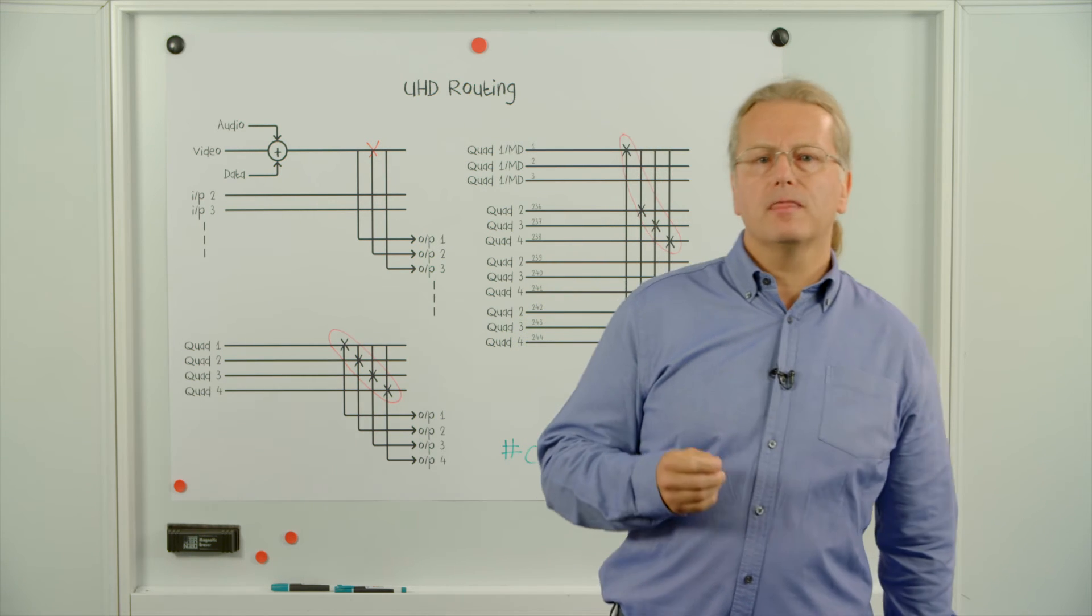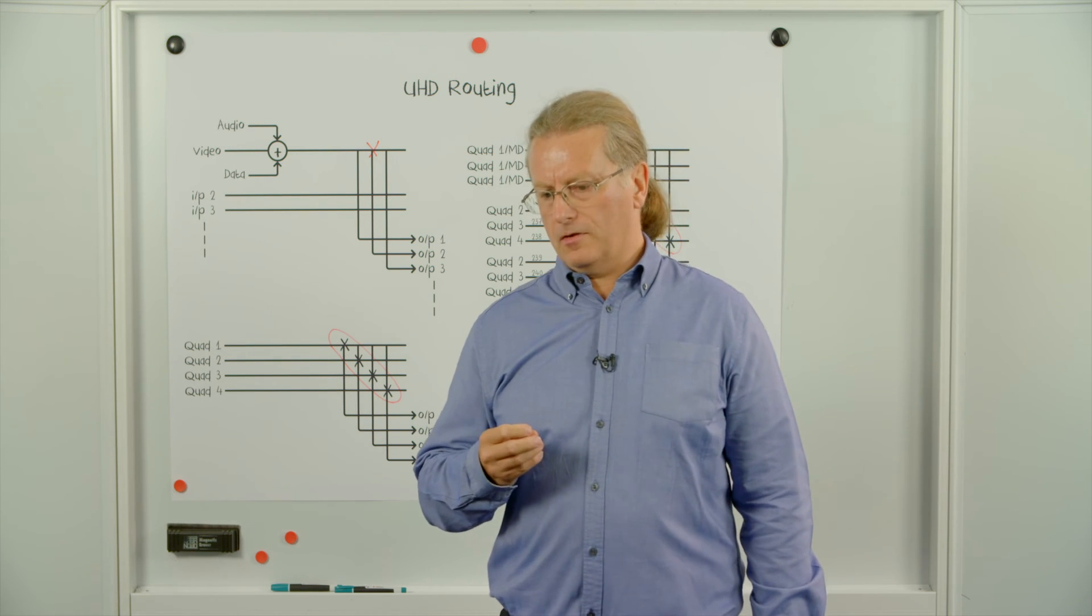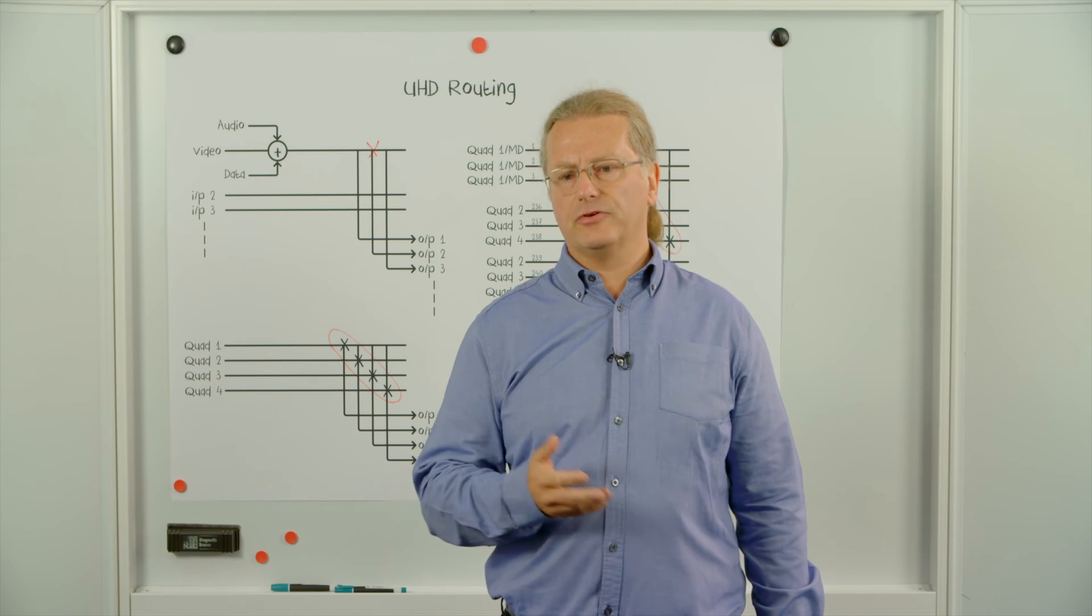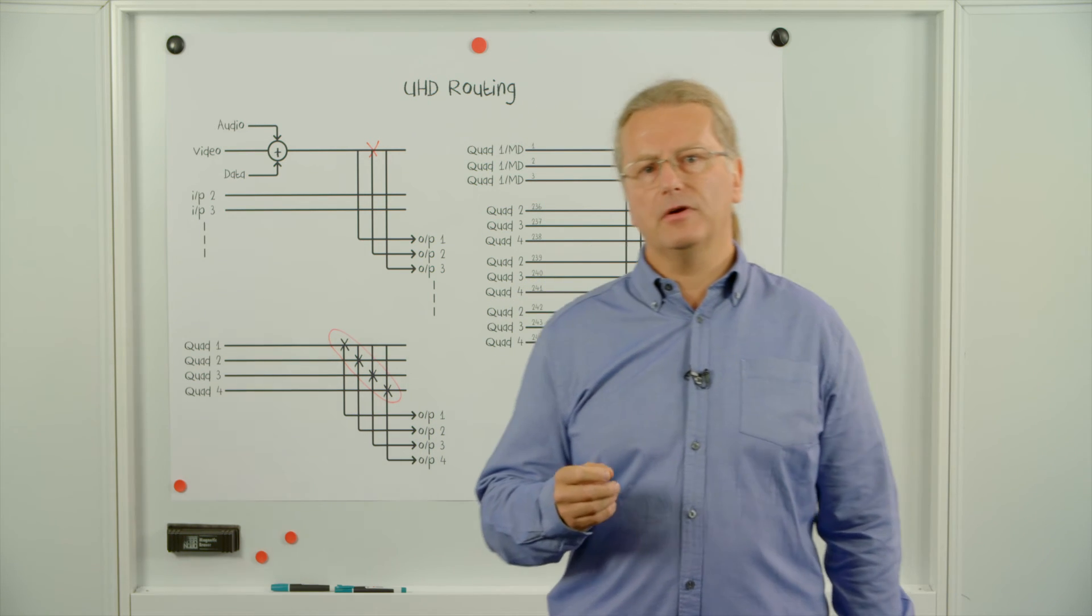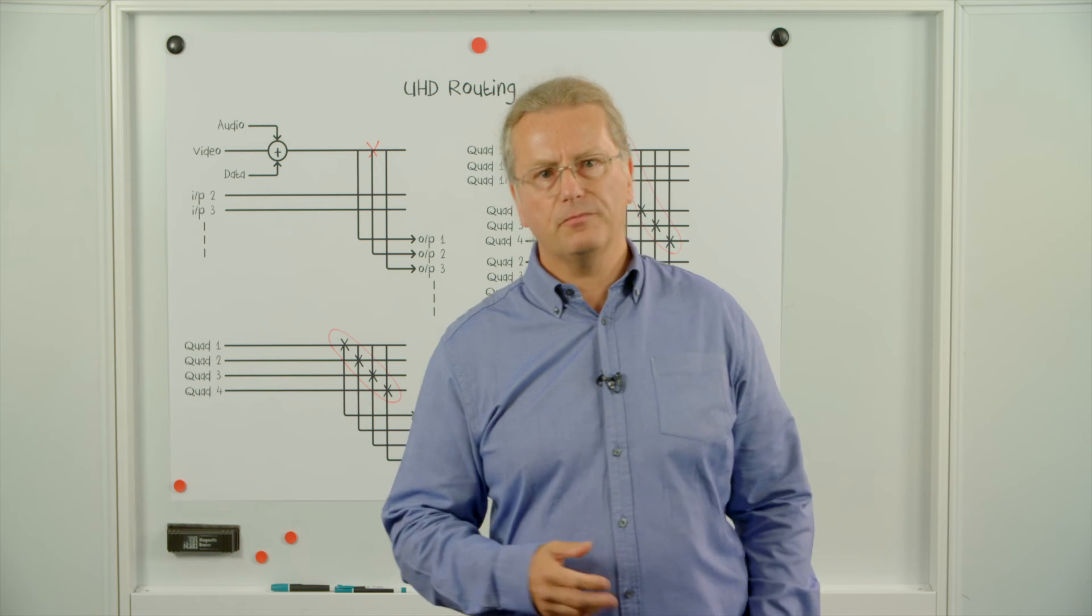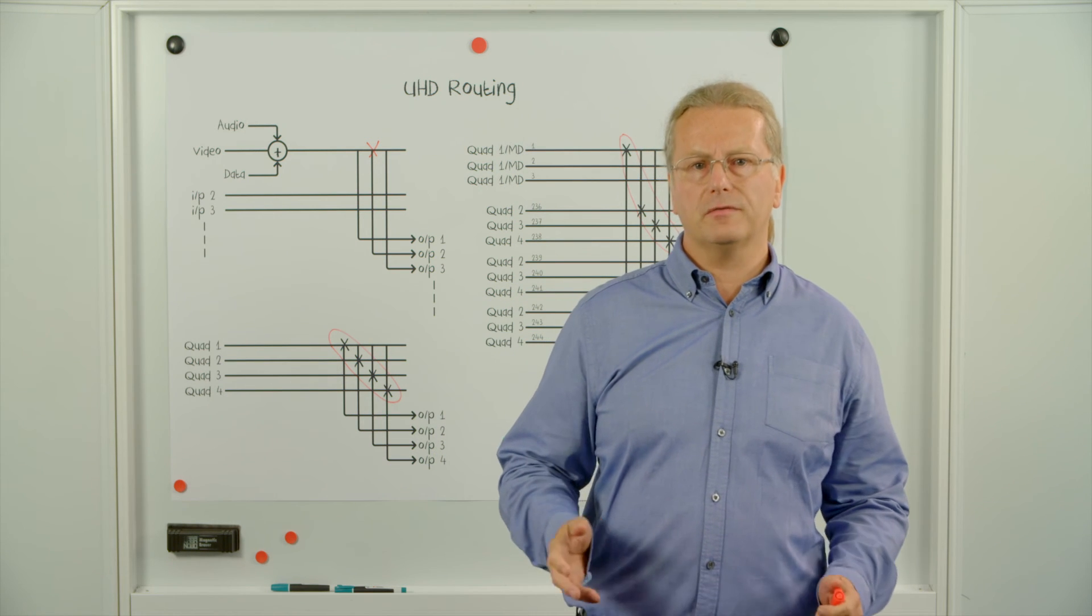In reality, most of the routing within an OB vehicle is actually electronic patching. Once you've set up the feeds into the multi-viewer and to the servers, for example, they probably don't change for the whole length of the production.